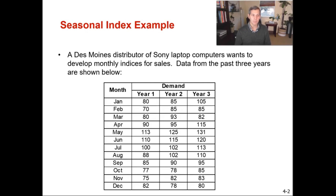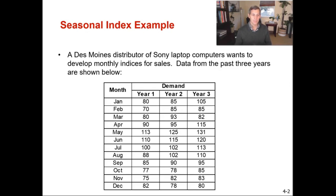Let's look at an example. A Des Moines distributor of Sony laptop computers wants to develop monthly indices for sales. Data from the past three years is shown below — three years of month-by-month data, which is really good historical data. Before diving into the details, does anyone see a seasonal trend? What I can see is that during the summer months — May, June, July — those months have higher demand. January, February, March have lower demand, and towards the end of the year demand is lower as well. So there is a clear trend and seasonality for this distributor.